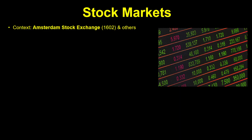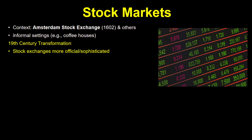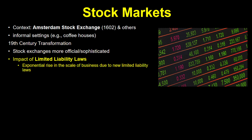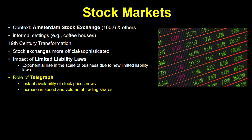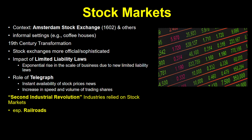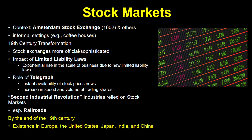Now, stock markets. It is true that stock markets did exist before this, notably in Amsterdam, but shares were often sold in informal settings like coffee houses. By the 19th century, they became more official and sophisticated, and because of new limited liability laws, the scale of business being conducted rose exponentially. Furthermore, the invention of the telegraph meant that news about stock prices became more instantly available, leading to an increase in the speed and volume of trading shares. Industries of the second industrial revolution relied heavily on stock markets, especially railroads. By the end of the 19th century, stock exchanges existed throughout Europe, the United States, Japan, India, and China.